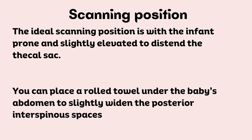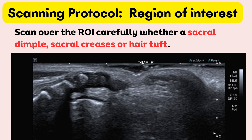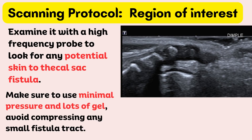The ideal scanning position is with the infant prone and slightly elevated to distend the thecal sac. You can place a rolled towel under the baby's abdomen to slightly widen the posterior interspinous spaces. Spinal ultrasound is performed in both the longitudinal and transverse planes using a linear 5 to 12 MHz transducer. Scan over the region of interest carefully, whether a sacral dimple, sacral creases, or hair tuft. Examine it with a high-frequency probe to look for any potential skin-to-thecal sac fistula, using minimal pressure and lots of gel to avoid compressing any small fistula tract.